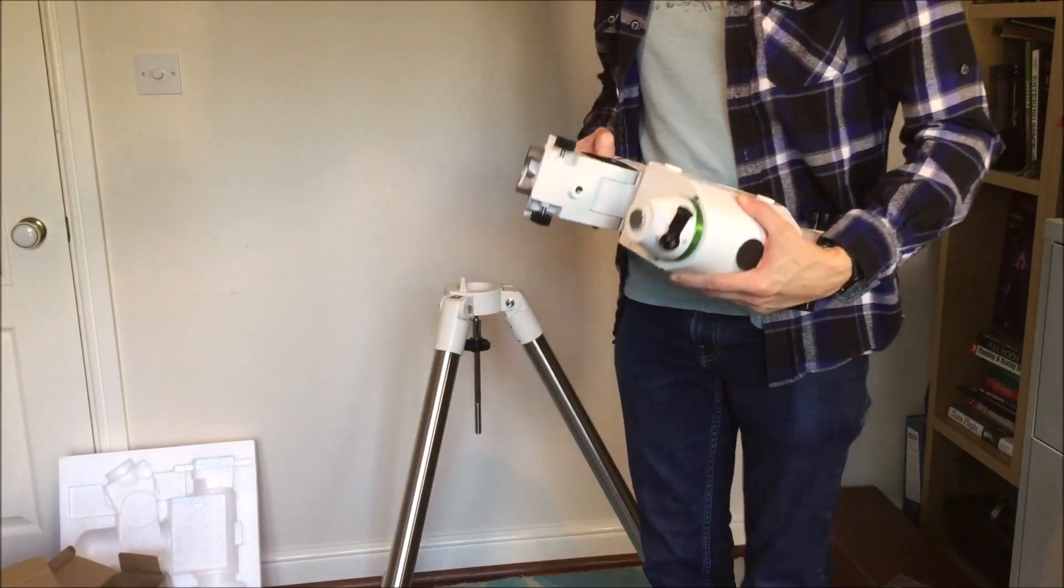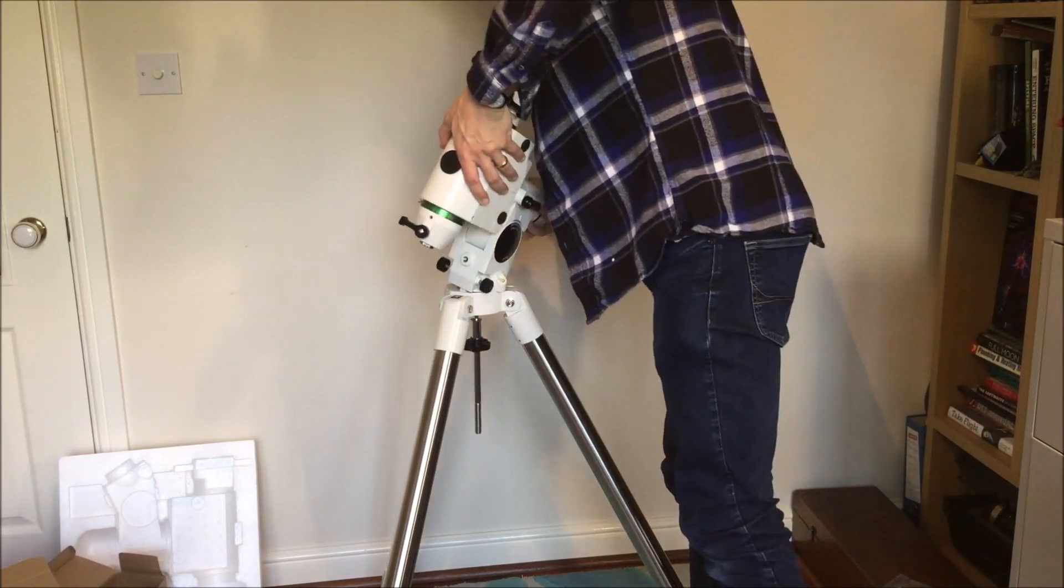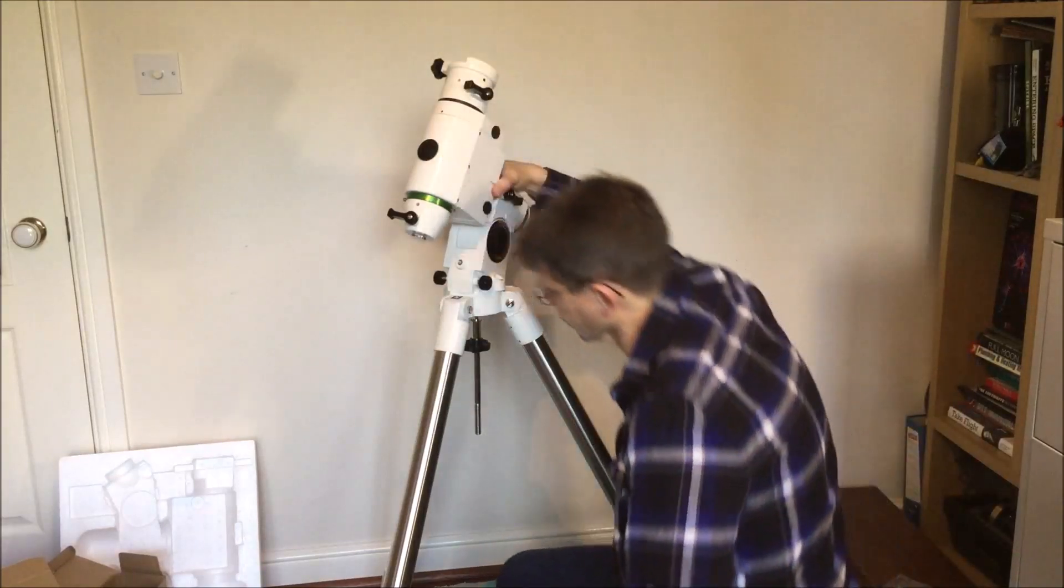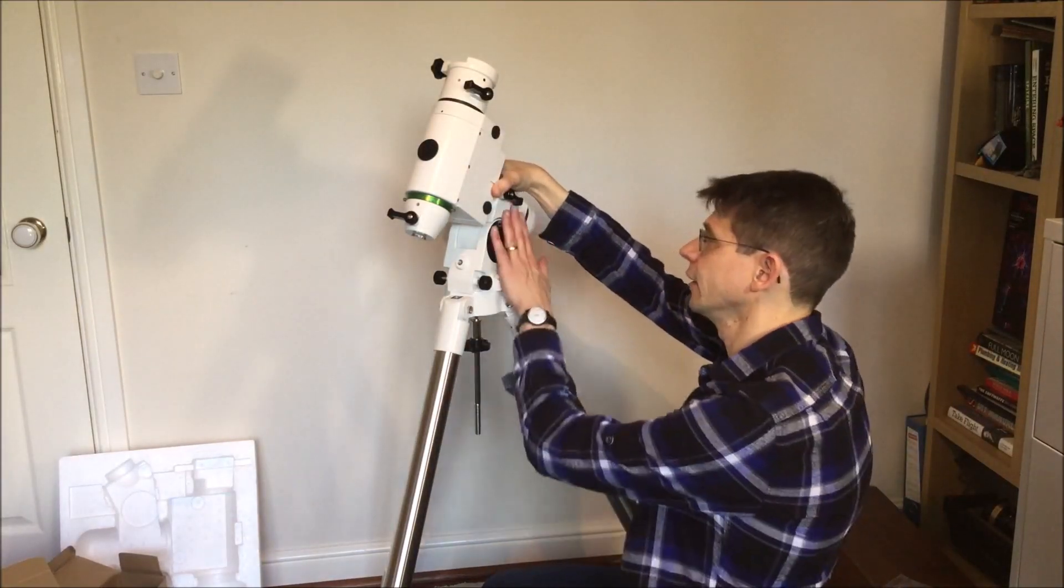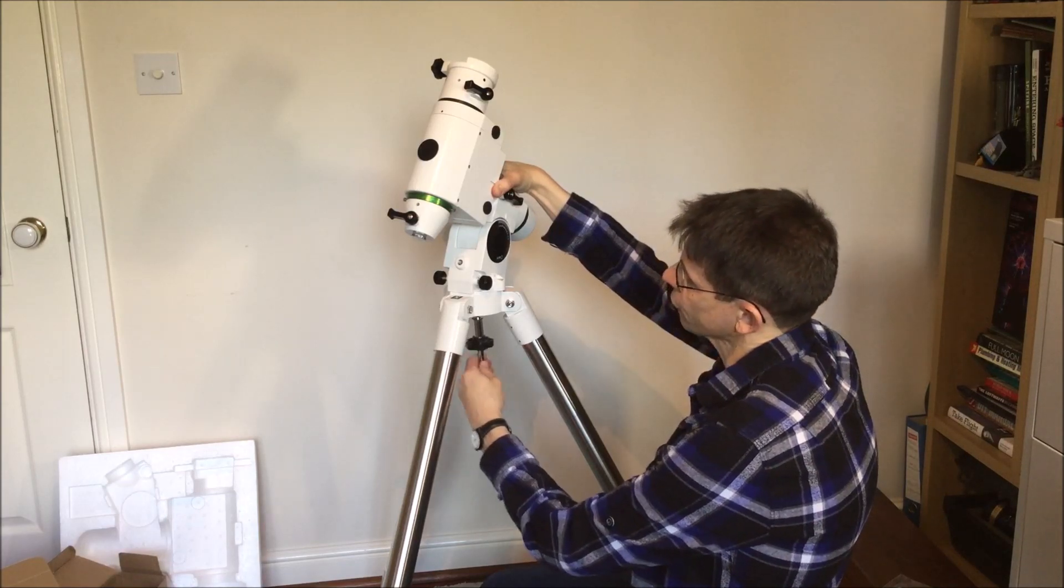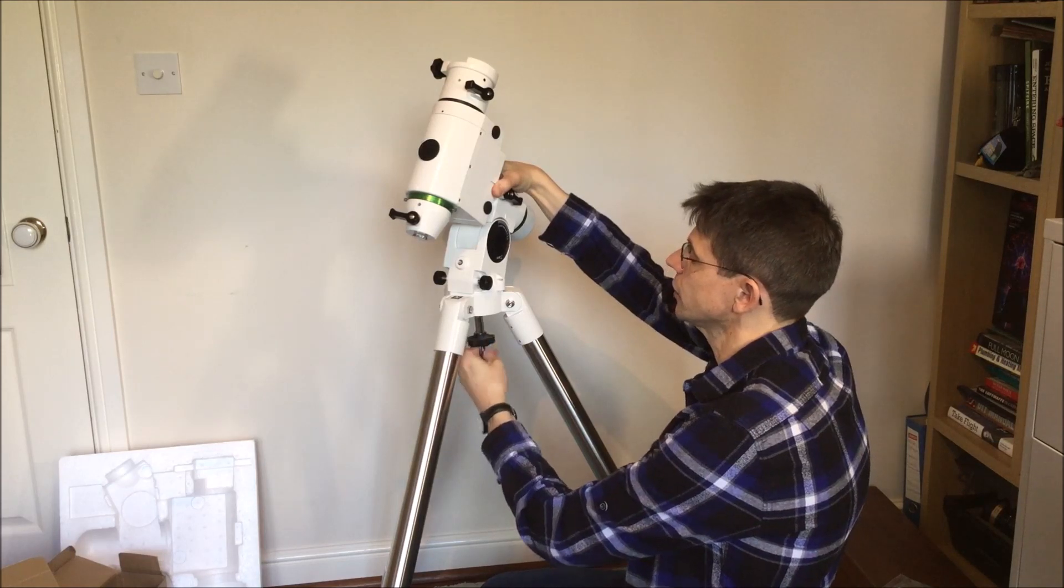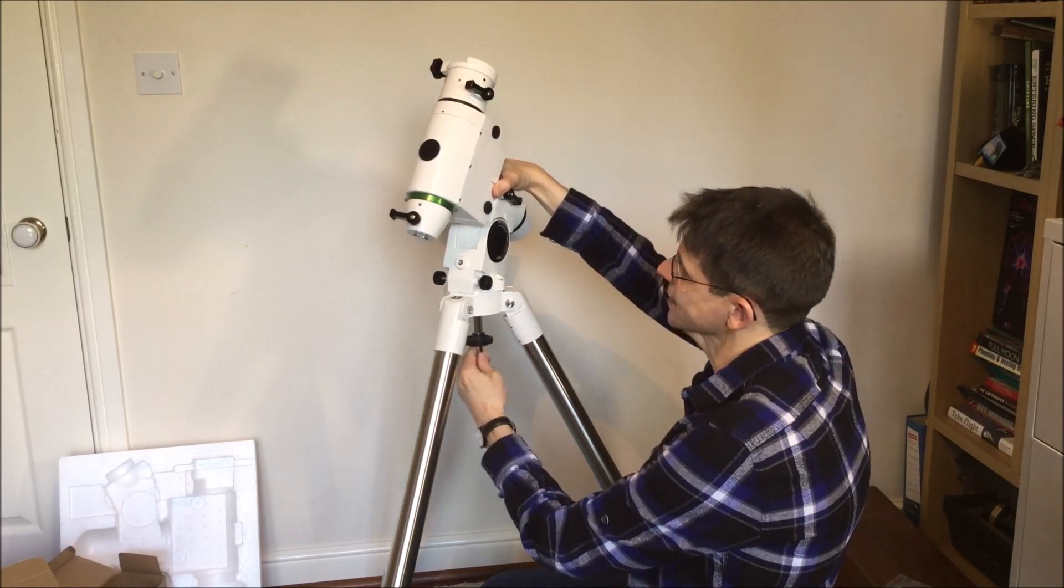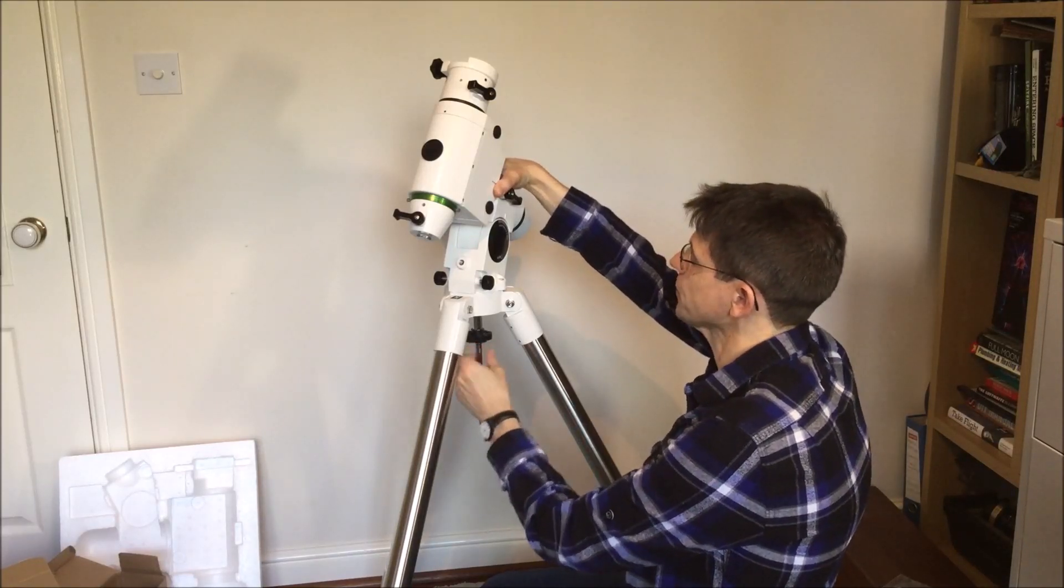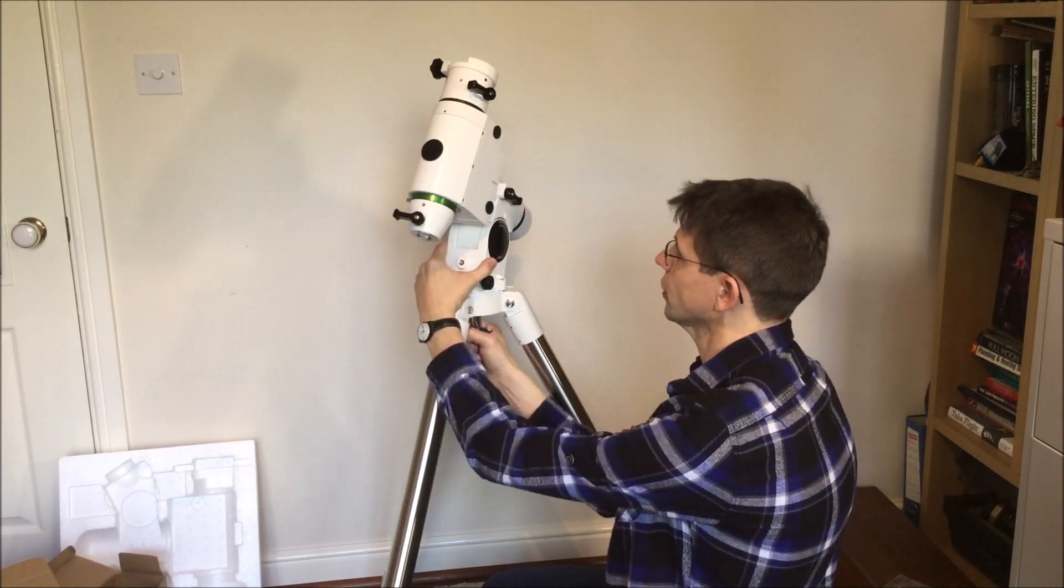So continuing with the assembly, we take the mount head and we locate it onto that pin that we saw previously on top of the tripod. Then whilst holding onto the head, slowly screw the thread of the attachment bolt from underneath until you can feel that it is located inside the mount head above. Like so. And keep screwing it all the way to the top. Tighten it up.